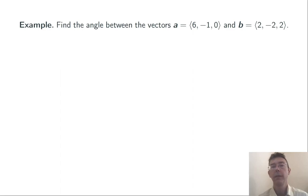For example, find the angle between ⟨6, -1, 0⟩ and ⟨2, -2, 2⟩.